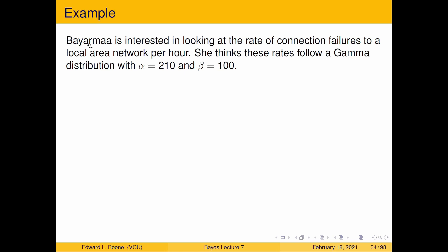All right, so let's look at an example. So, Bayarma is interested in looking at the rate of connection failures to a local area network per hour. She thinks these rates follow a gamma distribution with alpha equal to 210 and beta equal to 100.